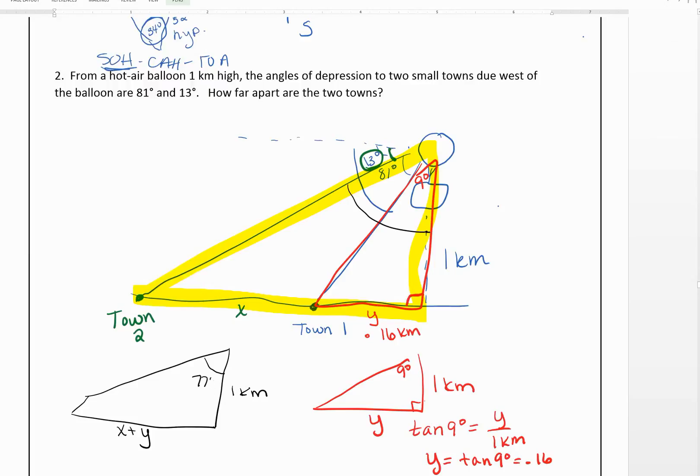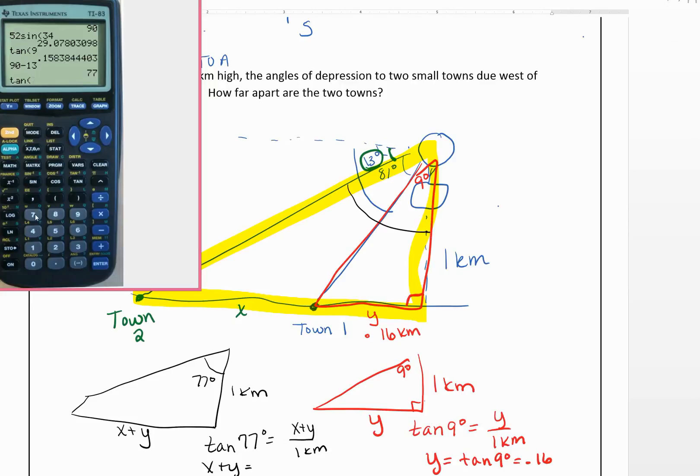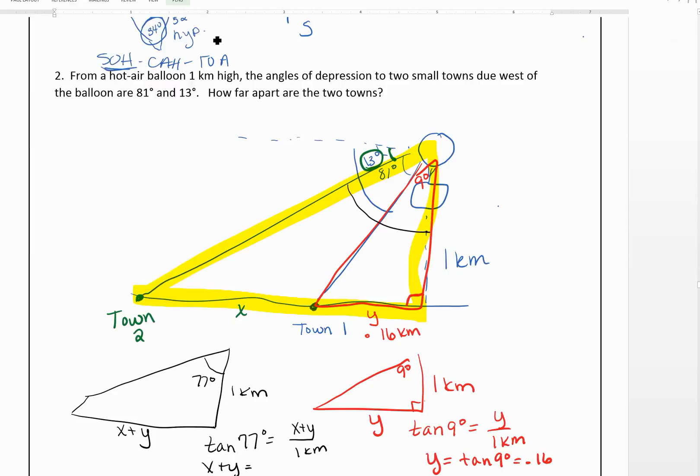So this is 77 degrees. So we can set up another tangent equation that tangent of 77 equals X plus Y over 1 kilometer. So X plus Y is going to be tangent of 77, which is 4.3 kilometers or 4.33.